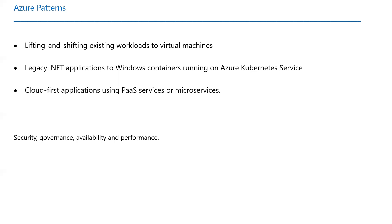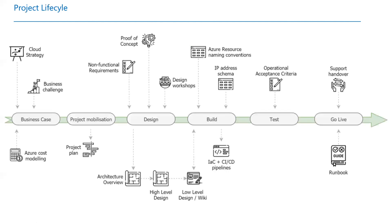I'm going to have separate videos on Azure Kubernetes Services as well. But for now I will be focusing on cloud-first applications using PaaS. You should always think about what actually drives these patterns — things like security, governance, availability, and performance. These are some of the non-functional requirements you should be absolutely clear on before jumping into any of the patterns you start looking at.